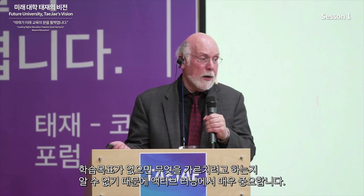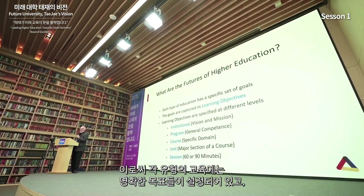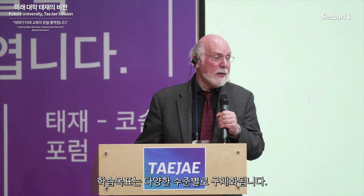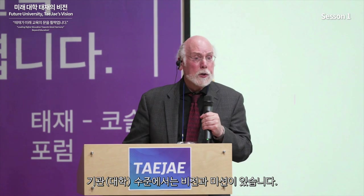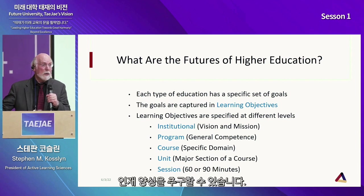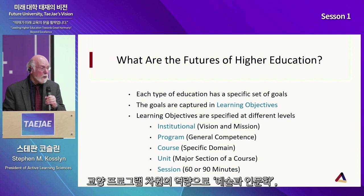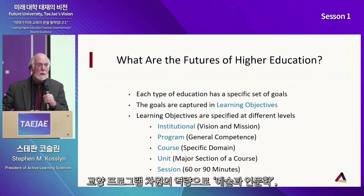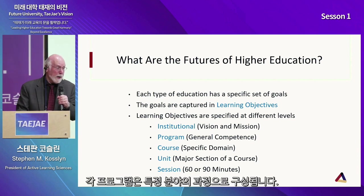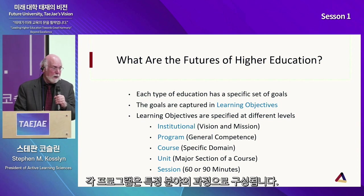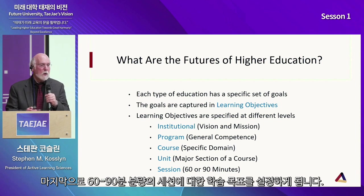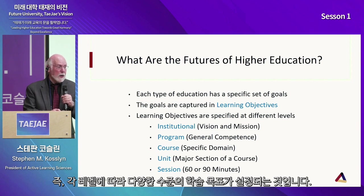Each type of education has a specific set of goals captured in learning objectives, which are specified at different levels. At the level of an institution, you have the vision and mission — for example, training international leaders. Then you have general programs with broad competencies like arts and humanities or AI and data science. Within each program you have domain-specific courses, and within each course they break down into units and individual sessions with their own learning objectives.